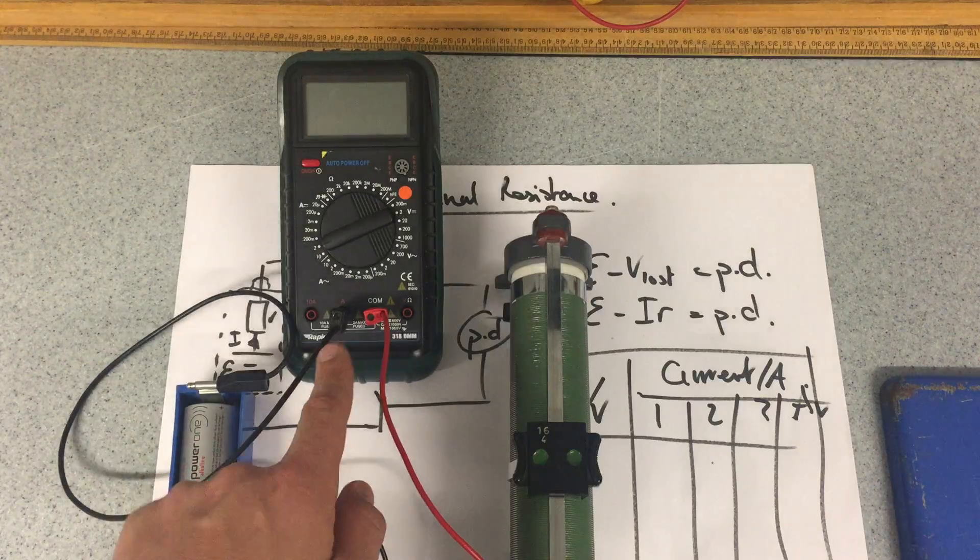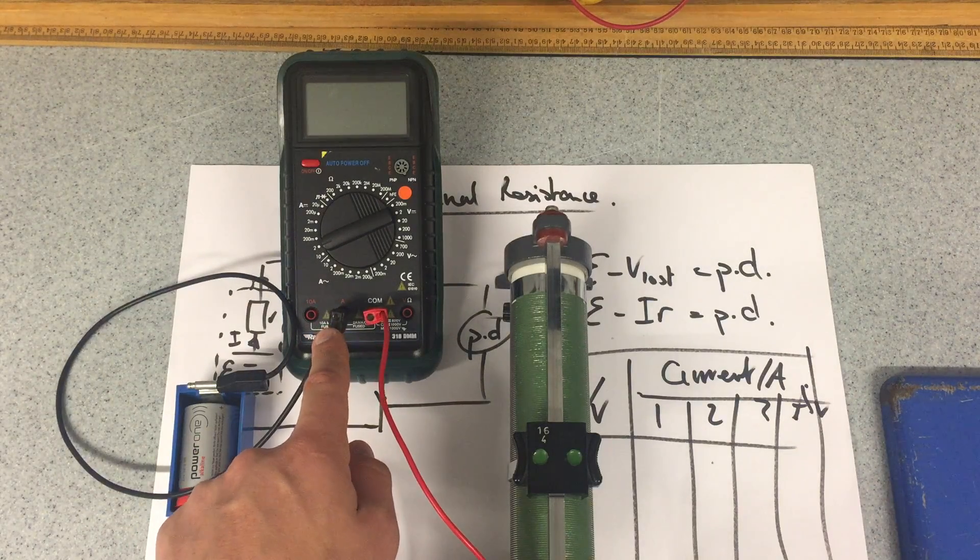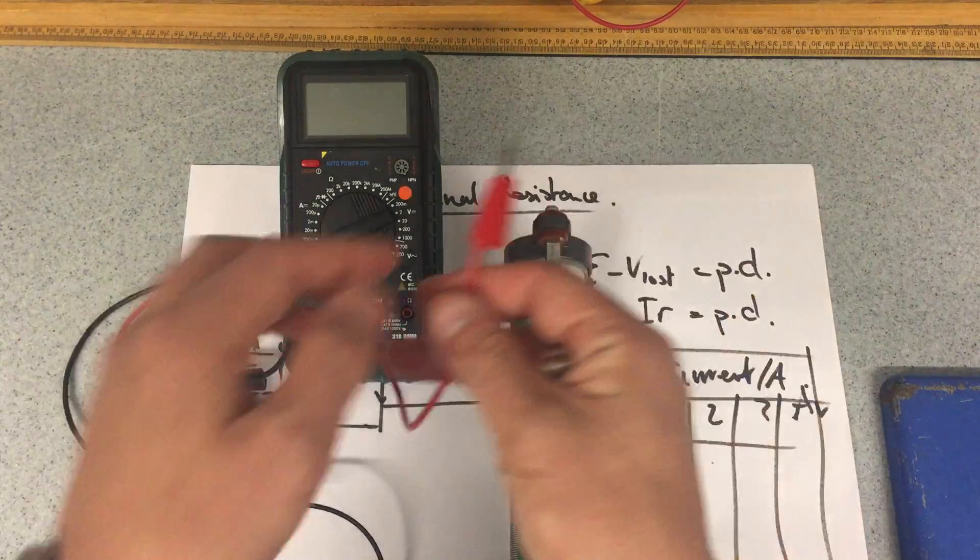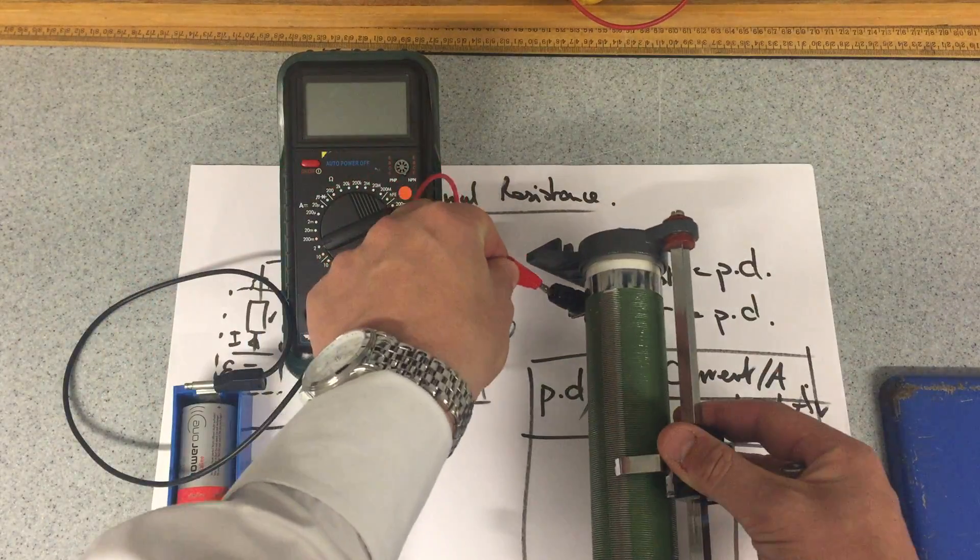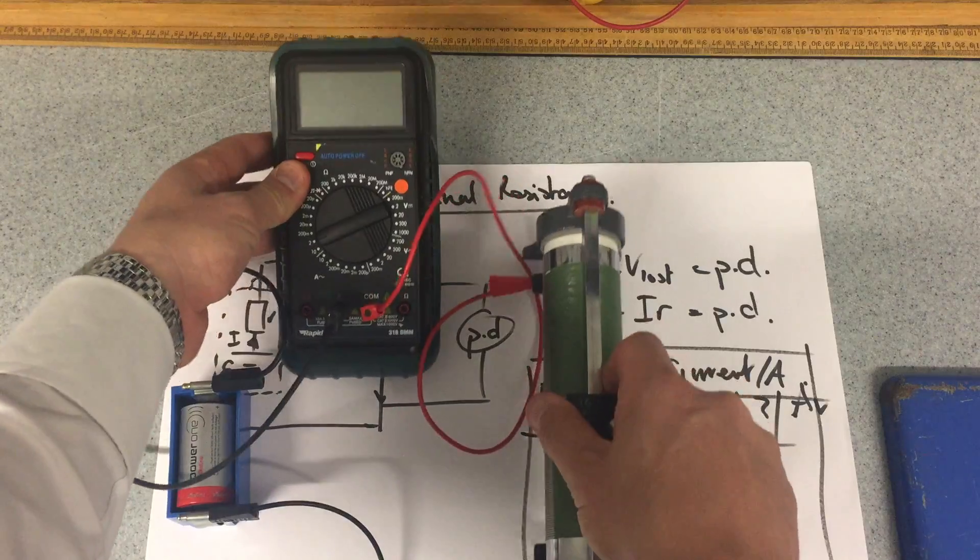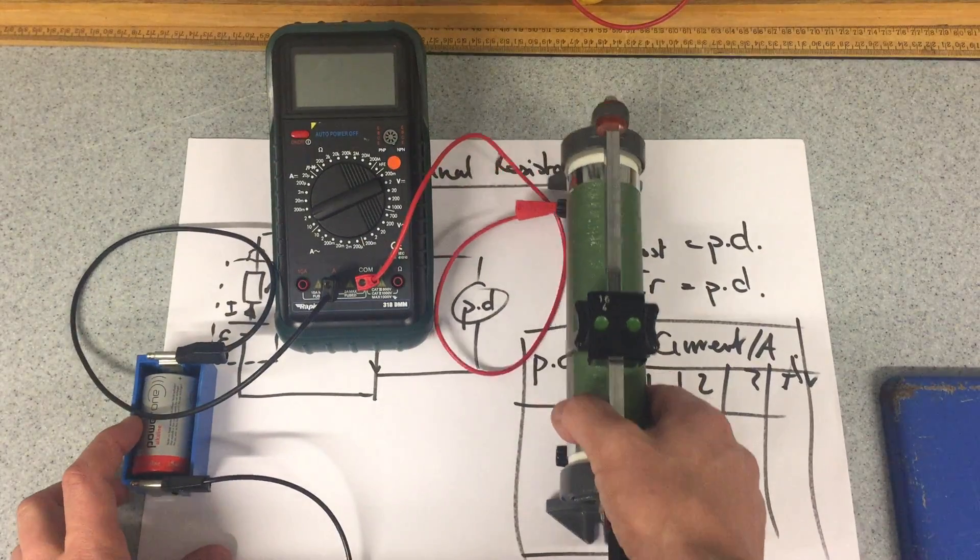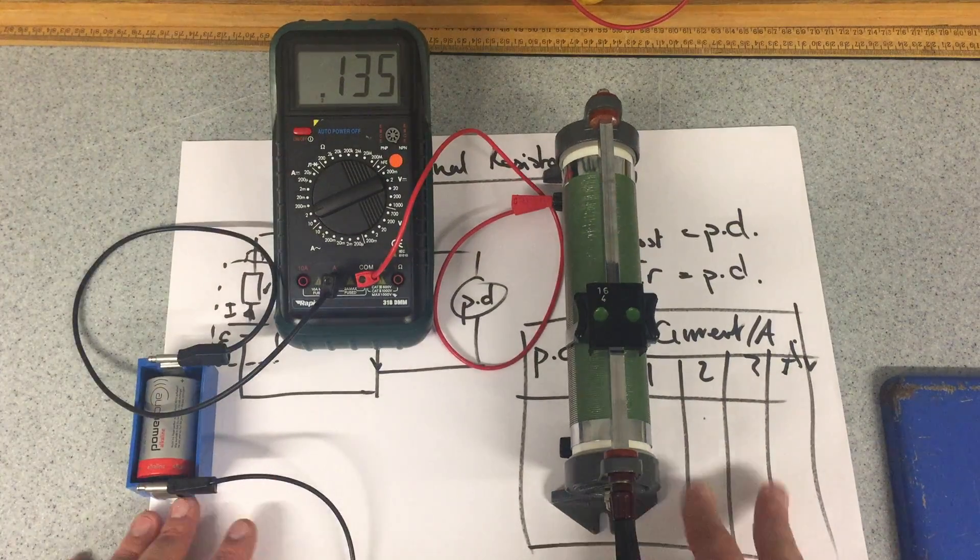And therefore it needs to go in this port here that says A for current—10 amps if you're using particularly large current—but A sign and COM, which then leads to here. So there is my series circuit.